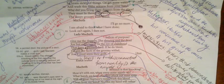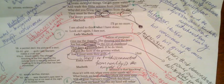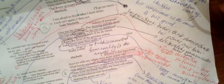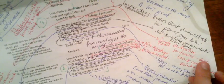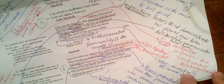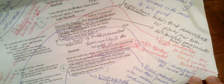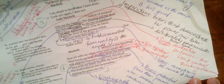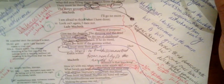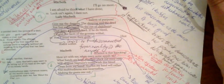Macbeth simply says 'I'll go no more. I am afraid to think what I have done. Look on it again I dare not.' The simplicity of his language here, the simple declarative sentences, show us the loss of control of his thinking. His mind is elsewhere—he doesn't want to think about what he's done.